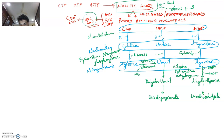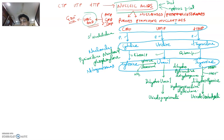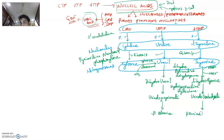In presence of a lyase, ureidopropionate is acted on by ureidopropionase and gets converted to beta-alanine. Ureidoisobutyrate gets converted to beta-aminoisobutyrate — also in presence of ureidopropionase.